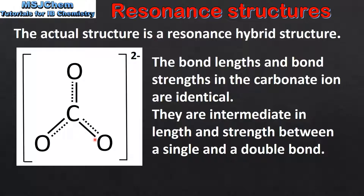These intermediate bonds are shorter than a single bond but longer than a double bond. And they are stronger than a single bond but weaker than a double bond. This is what is meant by being intermediate in length and strength between a single and a double bond.